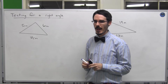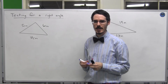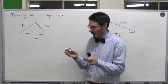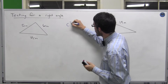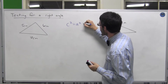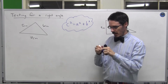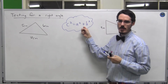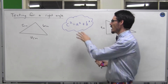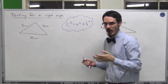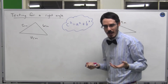Pythagoras' theorem can actually be used to test whether a triangle has a right angle in it. Pythagoras' theorem says for any right angle triangle, c squared is a squared plus b squared. This is true for any right angle triangle, but it also works the other way. If this is true, then you know you've got a right angle triangle. And if it's not true, then you know you haven't got a right angle.